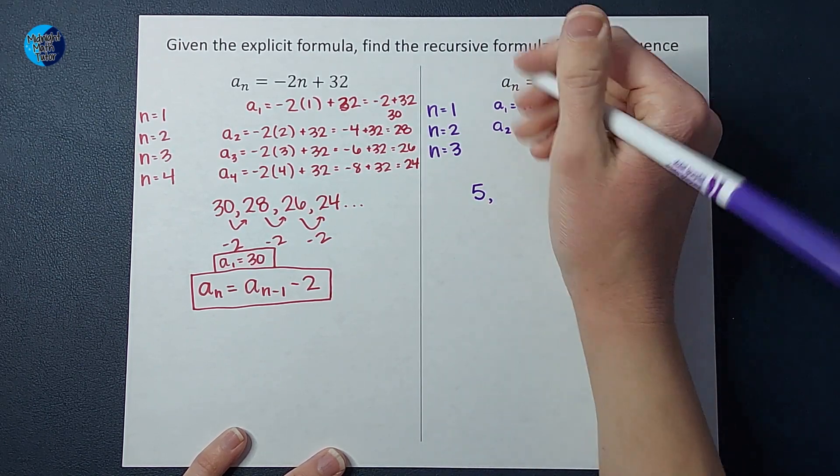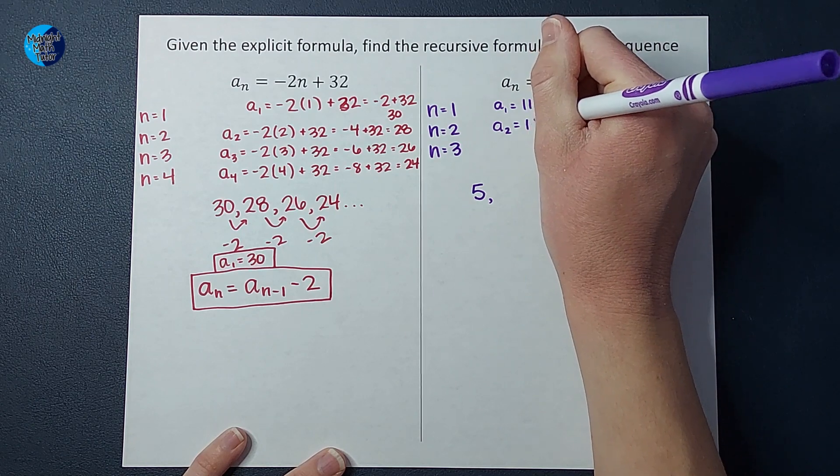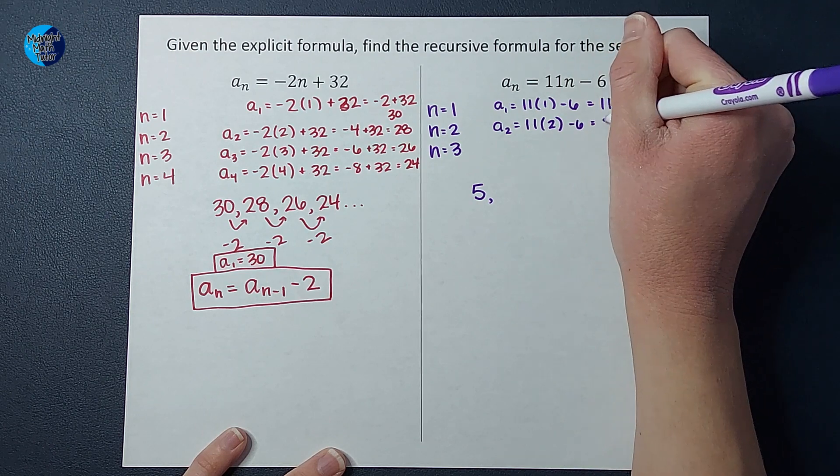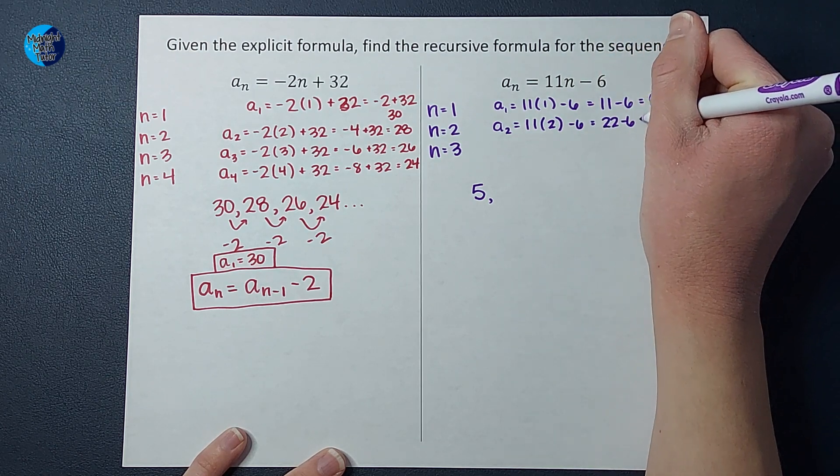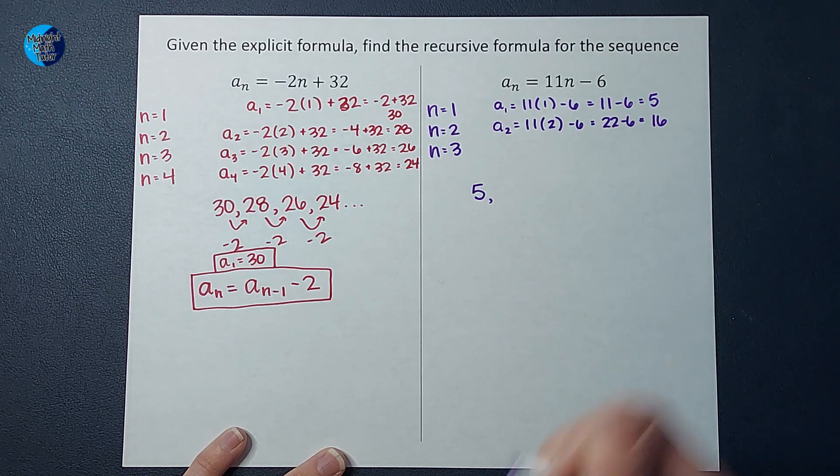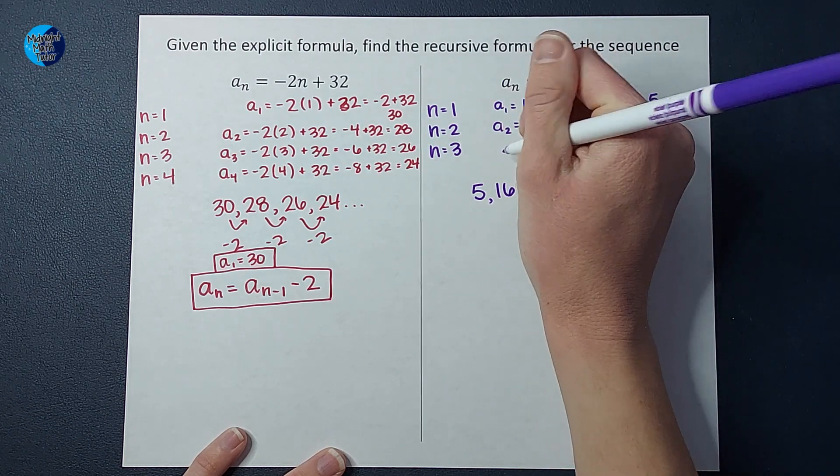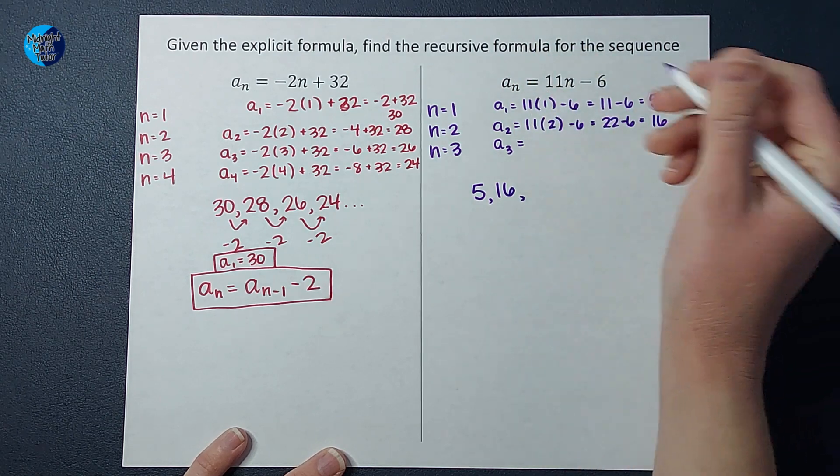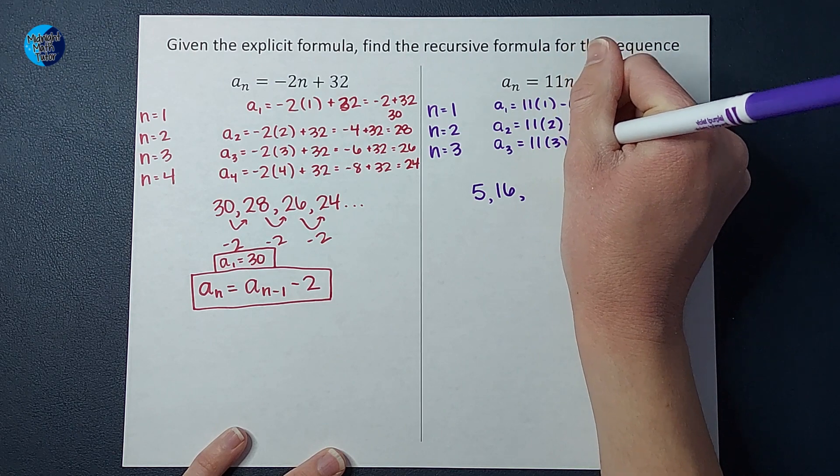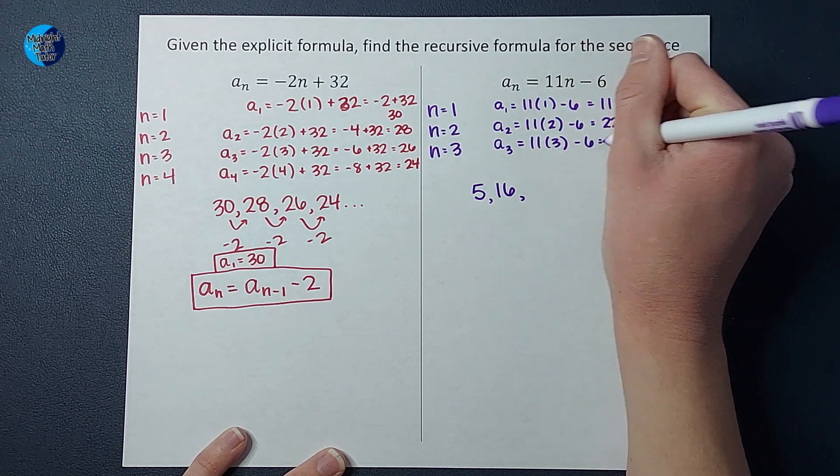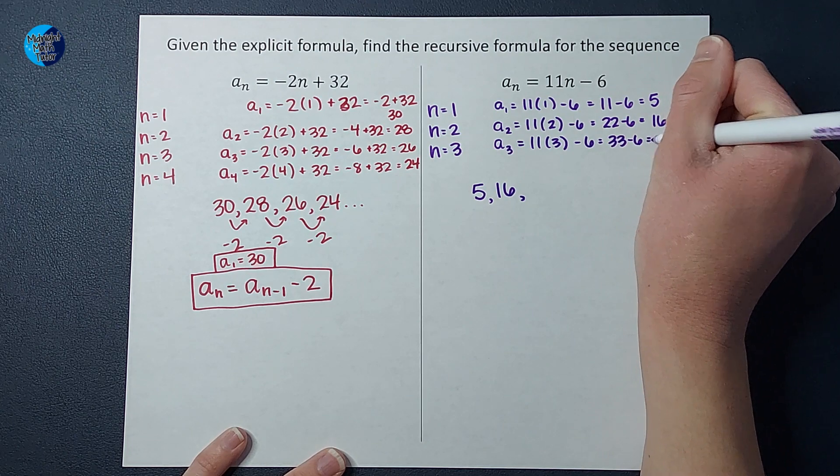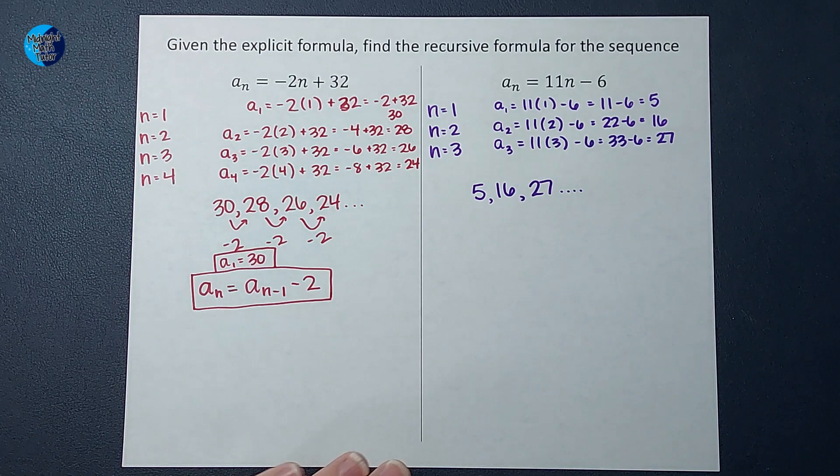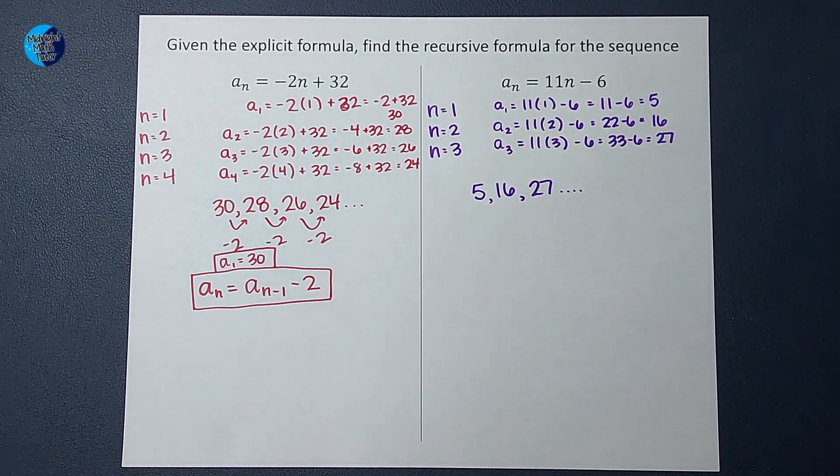A sub two, the second number in my sequence, we're going to take 11, multiply it by two, and subtract six. So 22 minus six, which gives me 16. So 16 is the second number. If I want to know the third term in this sequence, a sub three, I'm going to take 11, multiply it by three, subtract six, which gives me 33 minus six, which gives me 27. Again, we could figure out more if we really wanted to, but we have enough numbers to figure out the pattern.